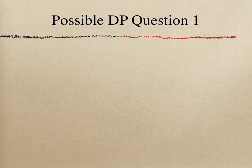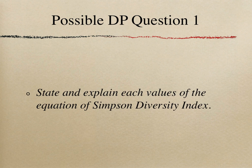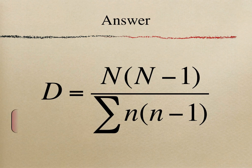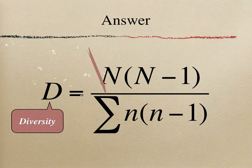I'm sure DP Biology questions about Simpson Diversity Index will be easy for you now. Possible DP question 1: state and explain each value of the equation of Simpson Diversity Index. The answer has been covered above, so let's skip it.